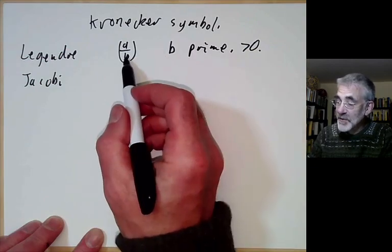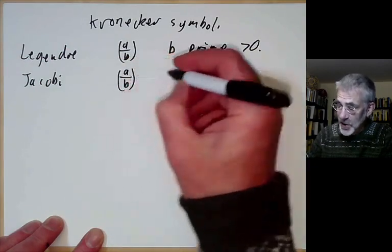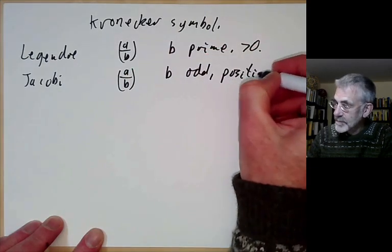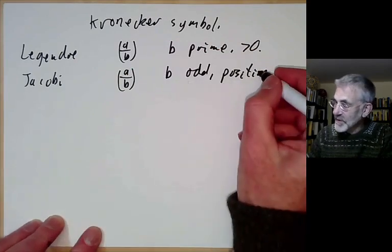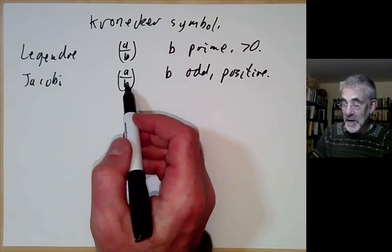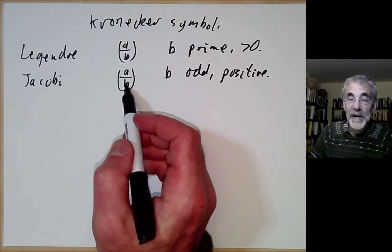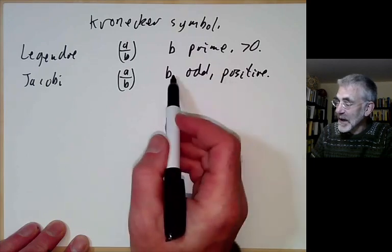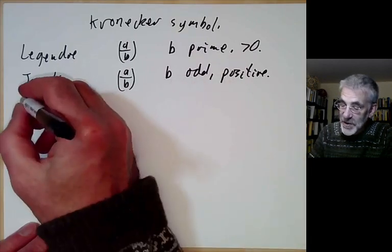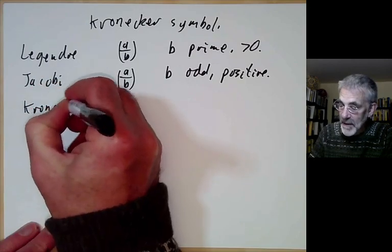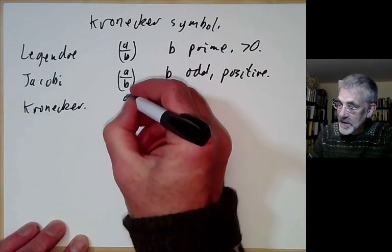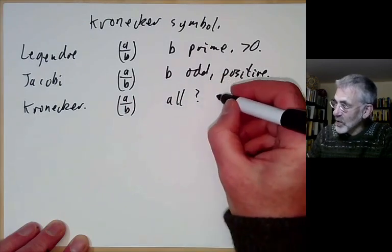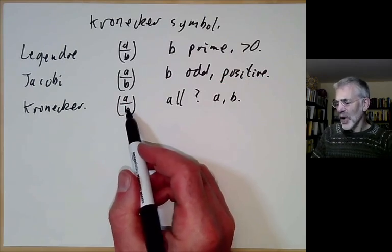It was a bit inconvenient with b restricted to being prime, so we extended this to the Jacobi symbol where b is now odd and positive. It was very convenient to have this defined for non-prime values of b and made it much easier to evaluate. One can obviously ask the question: can you extend it to all integer values of b? You can do this using something called the Kronecker symbol (a/b).